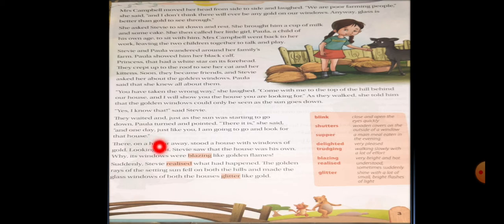There on a hill far away stood a house with windows of gold. Looking at it, Steve saw that the house was his own. Now Paula showed him the house that was his house only, and there were no golden windows in his house. So he was very surprised why its windows were blazing like golden flames.